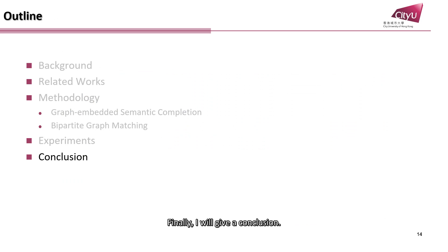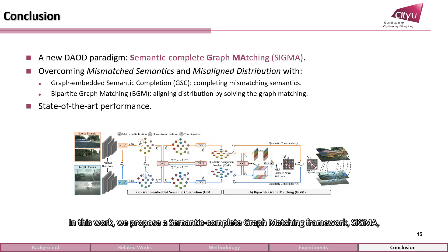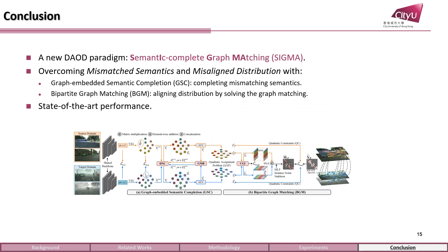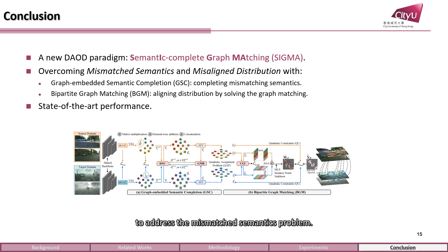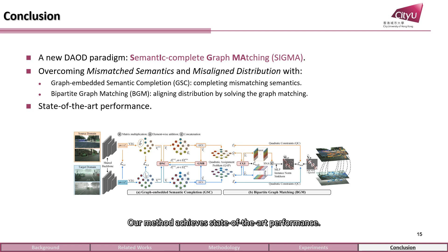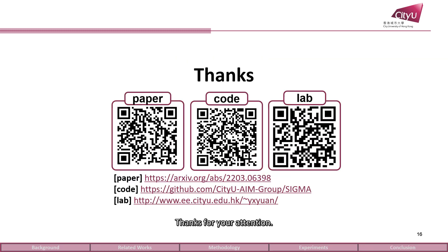Finally, I will give a conclusion. In this work, we propose a semantic-complete graph matching framework, SIGMA, which breaks through the two challenges in existing prototype-based methods. SIGMA consists of a graph-embedded semantic completion module to address the mismatched semantics problem, and a bipartite graph matching module to overcome the misaligned distribution. Our method achieves stellar performance. Thanks for your attention.